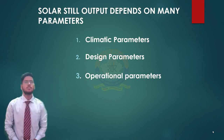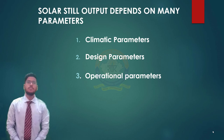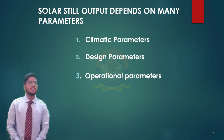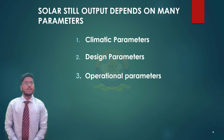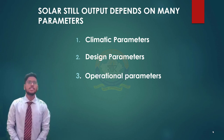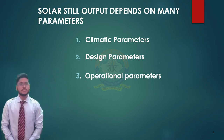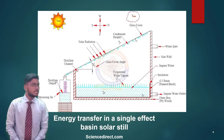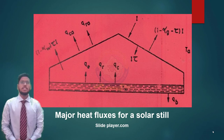Now we come to the dependency of output of a solar still on various parameters. The first is climatic parameters, which include solar radiation, ambient temperature, wind speed, outside humidity, and sky conditions. The second is design parameters: single slope or double slope, glazing material, water depth in basin, bottom insulation, orientation of the still, inclination of glazing, spacing between water and glazing, and type of solar still used. The third is operational parameters: preheating of water, coloring of water, salinity of water, rate of scale growth, and input water supply arrangement. These diagrams show energy transfer in a single-effect basin solar still and major heat fluxes of a solar still.